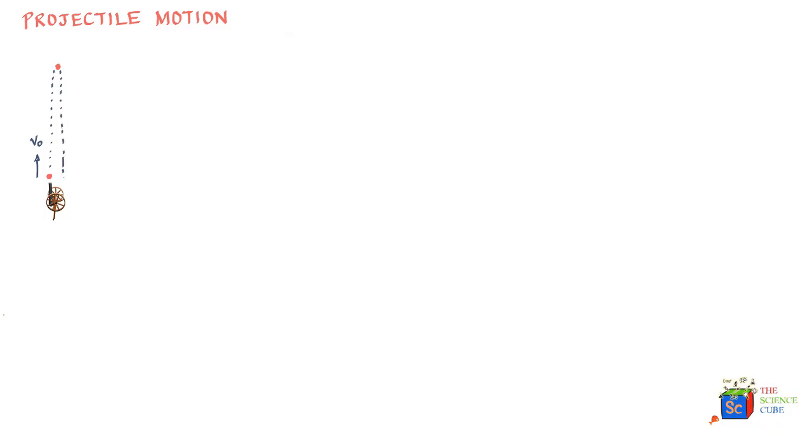Let us say you have a cannon and you project a cannonball up with velocity v₀. The ball comes out of the cannon with velocity v₀, goes up, and as it moves up its velocity keeps reducing under the force of gravity. It reaches its maximum height after time t, then starts moving down, velocity increasing again due to gravity, and hits the ground with the same speed v₀ but with the direction of velocity reversed.